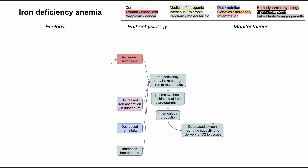There are a few big buckets for the etiologies of iron deficiency anemia. First is increased blood loss — you could lose blood through trauma or internal bleeding. Second is decreased iron absorption in the intestines, where iron isn't absorbed properly in the stomach and small intestine. Third is decreased iron intake, a malnutrition problem. And lastly, there are metabolic conditions where you have increased iron demand, which can also cause iron deficiency.